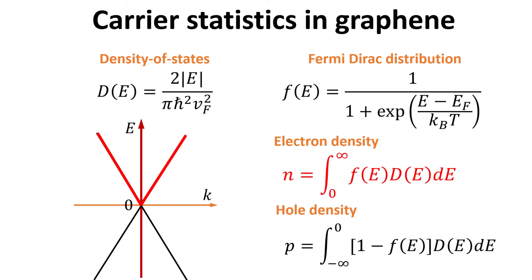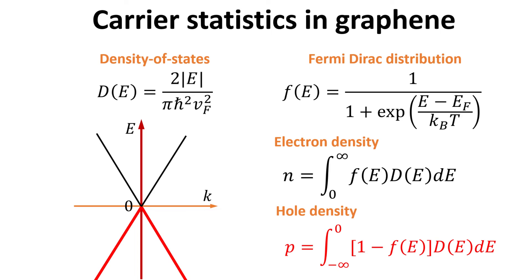The electron density, N, is given by the product of F and D, integrated over the conduction band. The hole density, P, is given by the product of 1 minus F and D, integrated over the valence band.